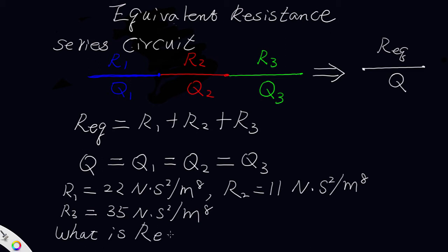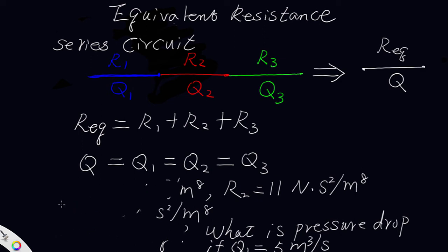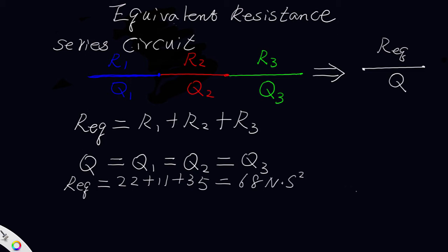What is the equivalent airway resistance, and what is the pressure drop if Q1 equals 5 cubic meters per second? We can solve: the equivalent resistance equals 22 plus 11 plus 35, which equals 68 Newton·second² divided by meter to the eighth.